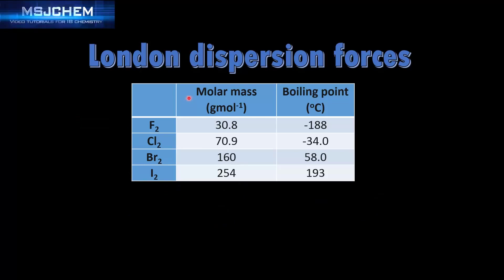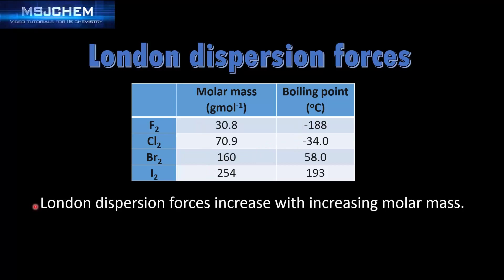Next we look at the effect of increasing molar mass on the boiling point of molecules. Here we have the diatomic molecules F2 (fluorine), Cl2 (chlorine), Br2 (bromine), and I2 (iodine). As we go from top to bottom the molar mass is increasing and so is the boiling point. London dispersion forces increase with increasing molar mass.